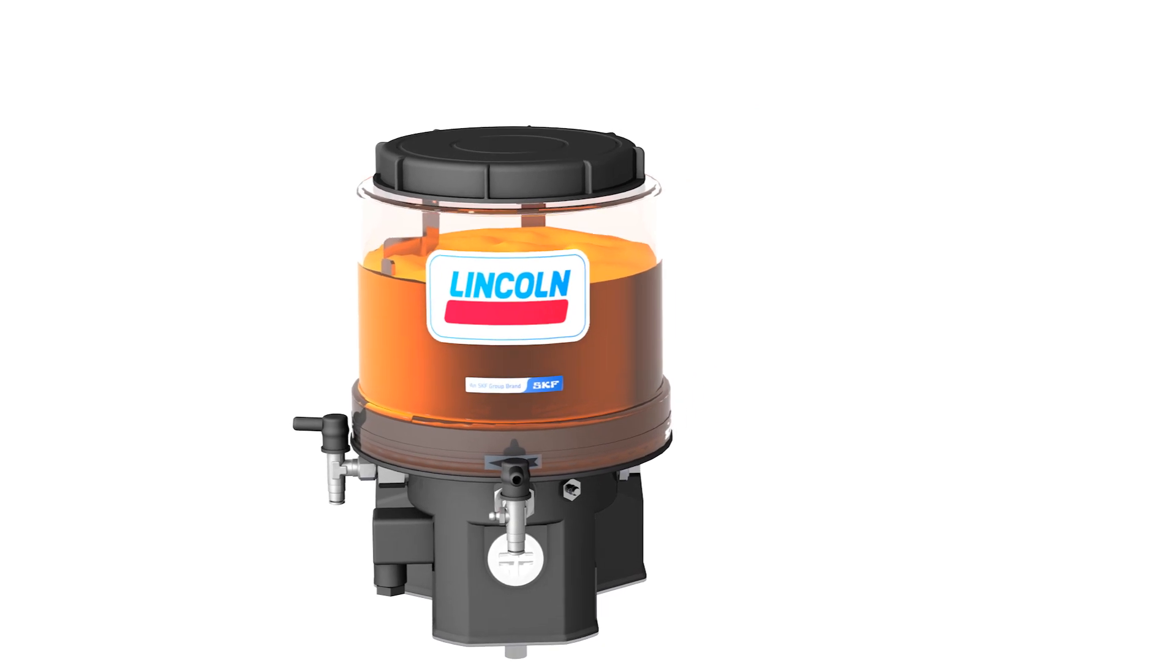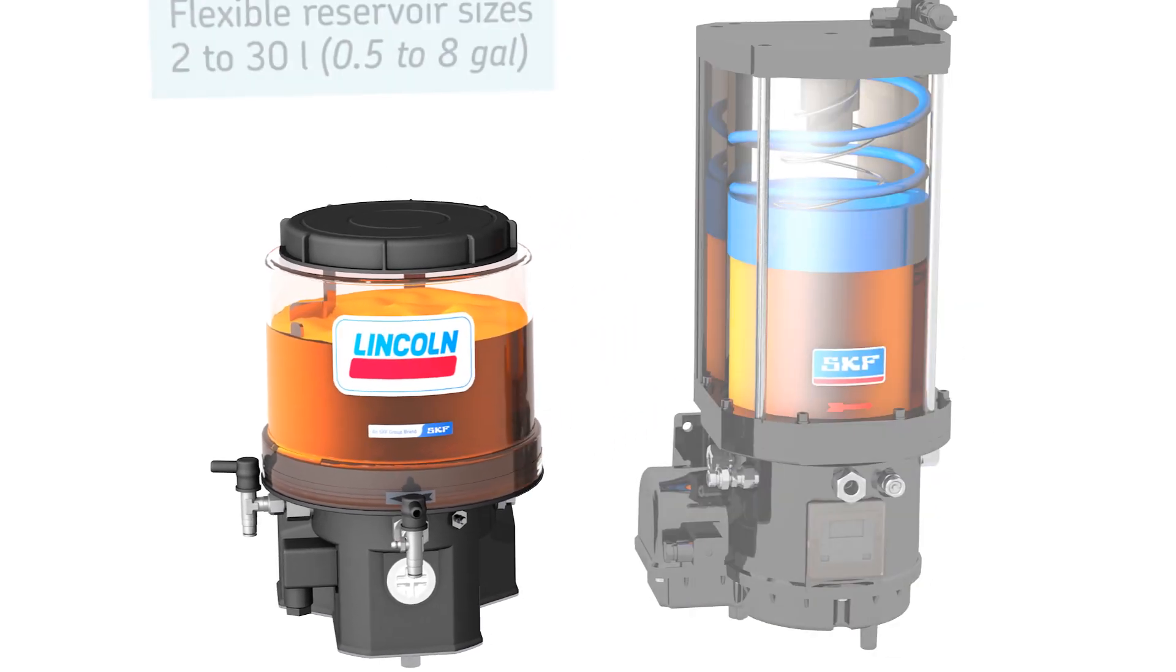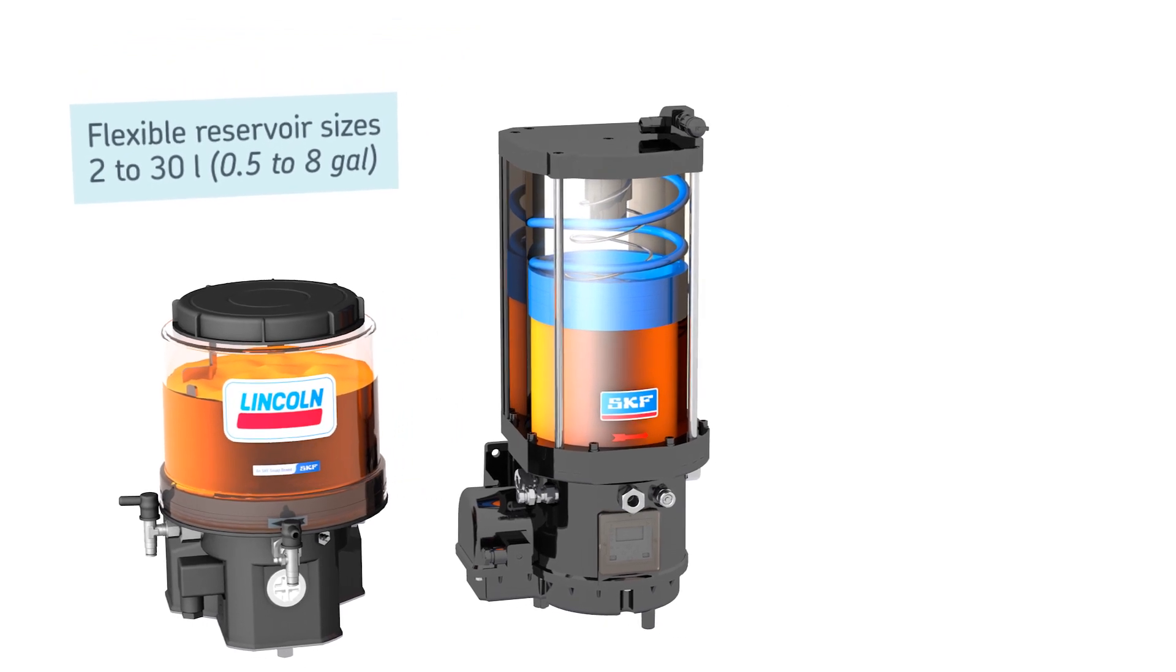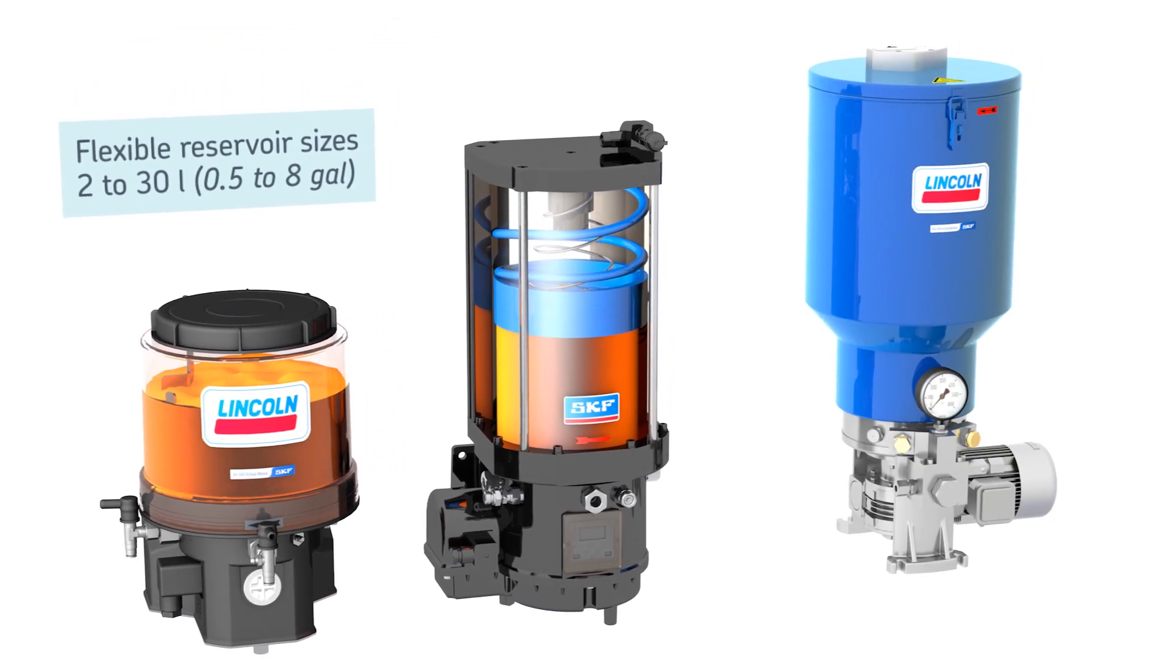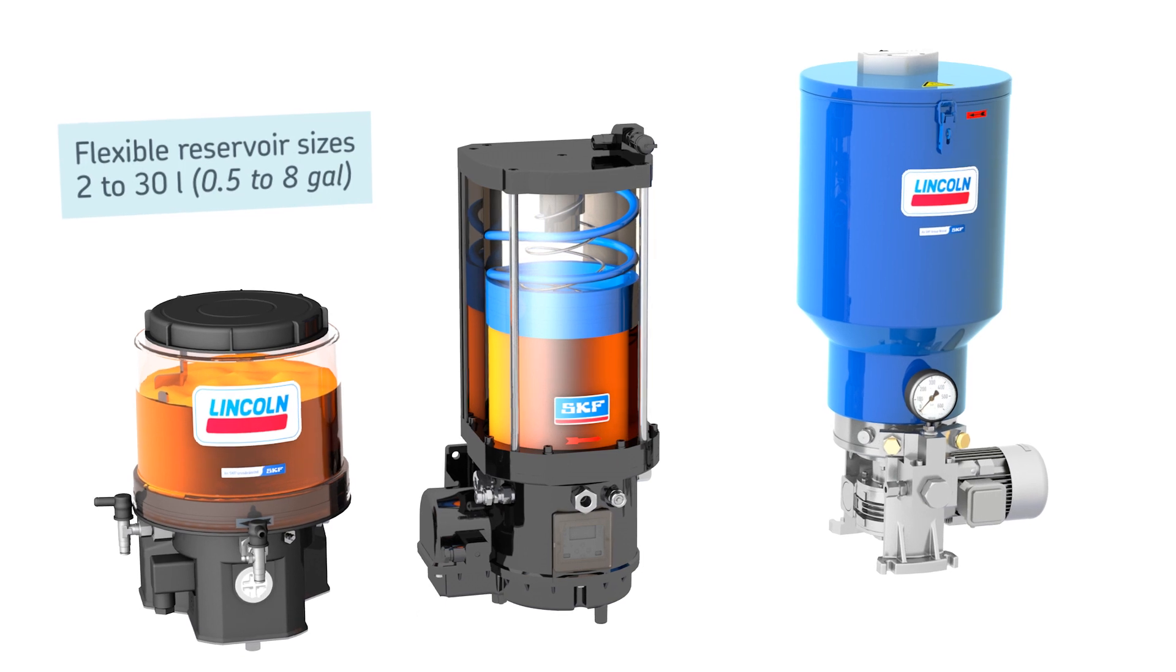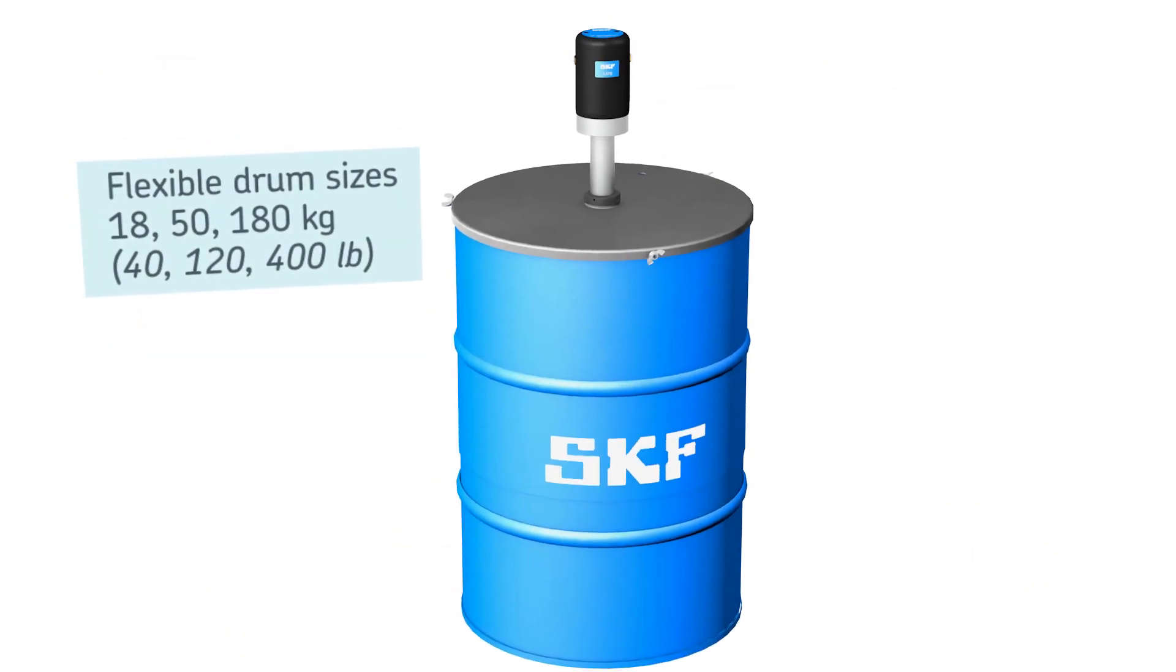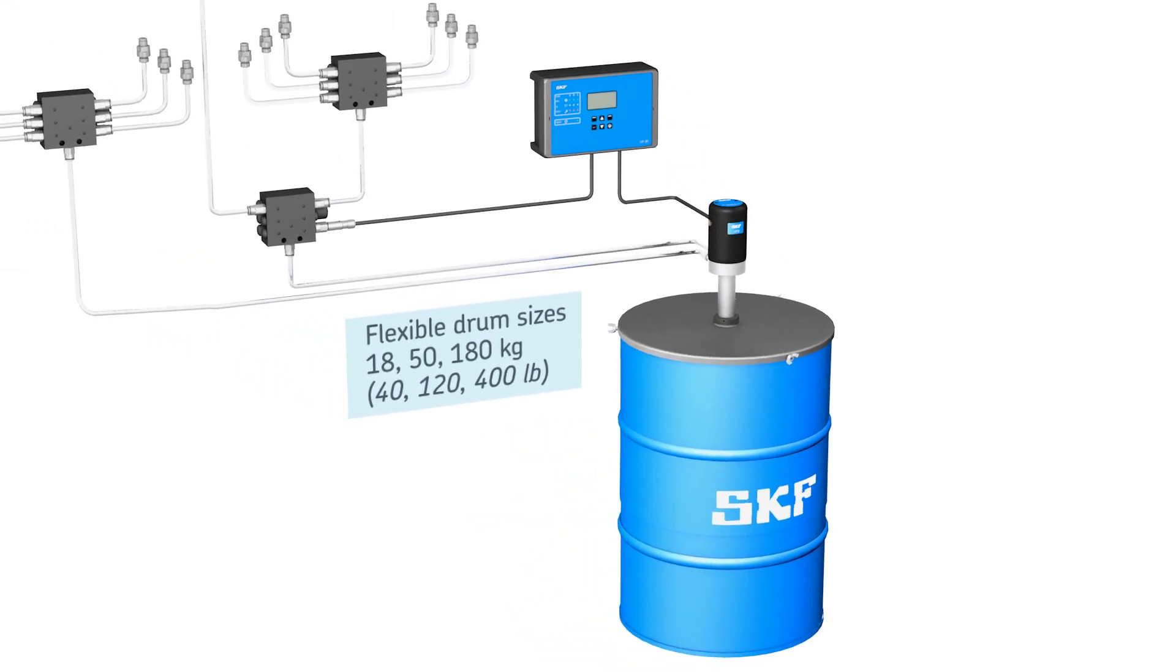SKF progressive lubrication pumps are available in pneumatically, hydraulically or electrically operated models and come with reservoir sizes ranging from 2 to 30 liters (0.5 to 8 gallons). These system pumps can also be supplied directly by SKF drum pumps such as the MPB.